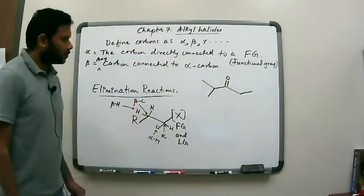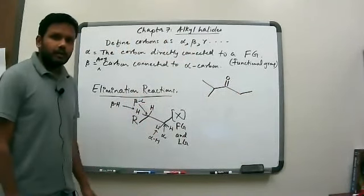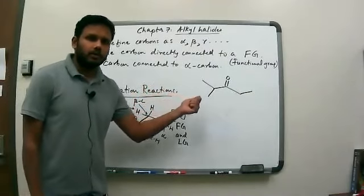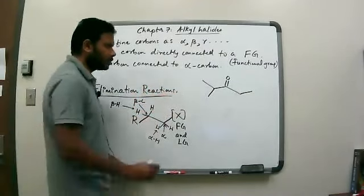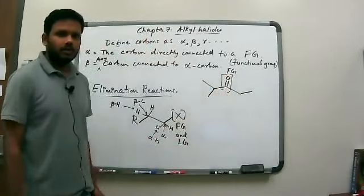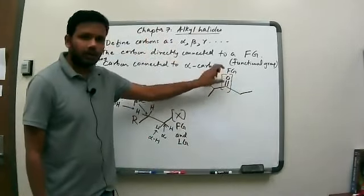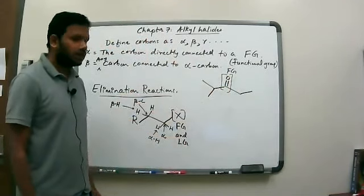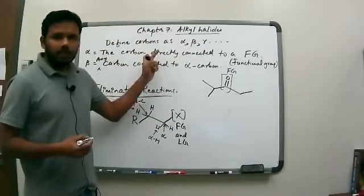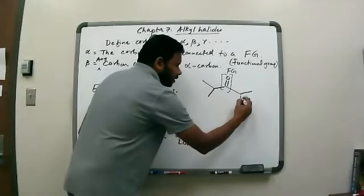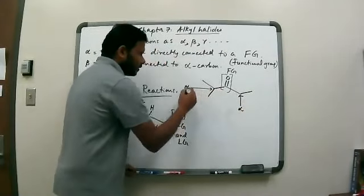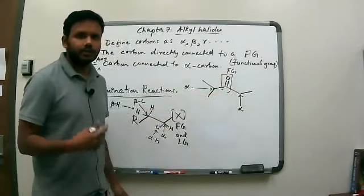Let's look at a ketone molecule as another example of alpha and beta. The functional group for a ketone is the carbonyl group — the C double bond O. Any carbon directly connected to the carbonyl is an alpha carbon. In this molecule, both carbons on either side of the carbonyl are alpha carbons.